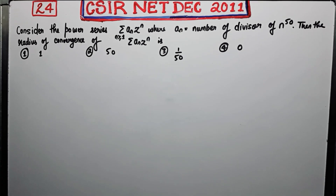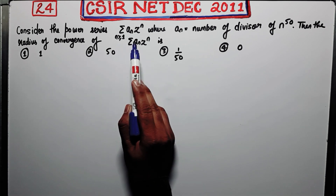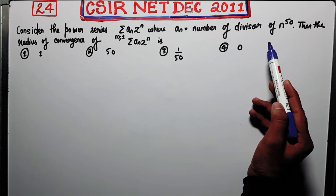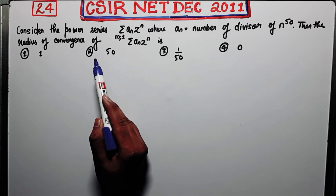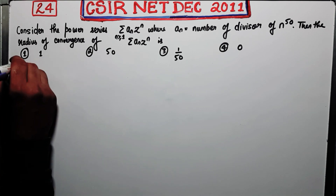Welcome back. We are here to solve problem number 24 of CSIR Net December 2011. The question says: consider the power series summation a_n z^n, where a_n is the number of divisors of n to the power 50. We need to find the radius of convergence of this series. The options are 1/50, 1, 1/50, and zero.